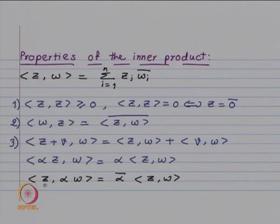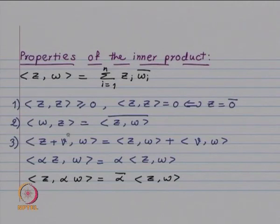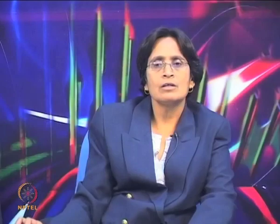When you consider z comma alpha w, alpha will come out as alpha bar because of conjugate symmetry. So the inner product is conjugate linear in the second variable. This is the difference between real and complex inner product: the real inner product was symmetric, whereas now it is conjugate symmetric. The real inner product had linearity in both variables, whereas the complex inner product is linear in the first variable and conjugate linear in the second variable. Otherwise it is exactly similar.